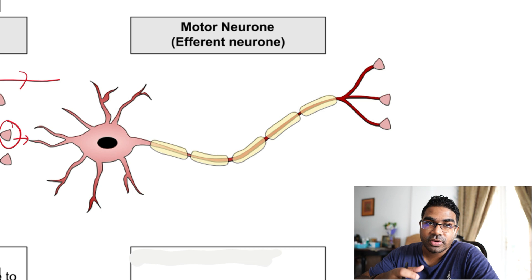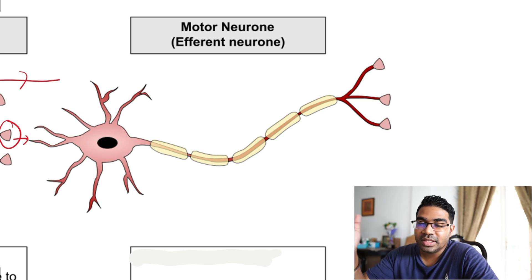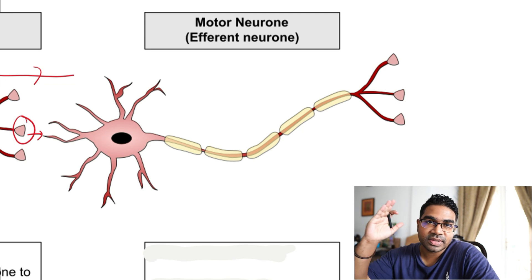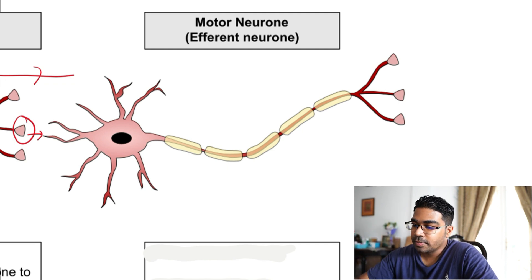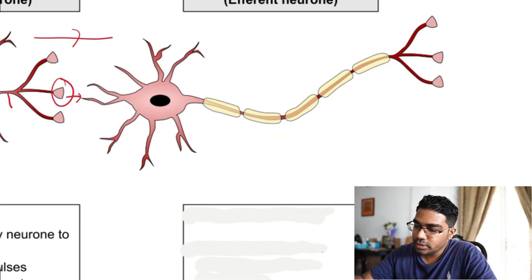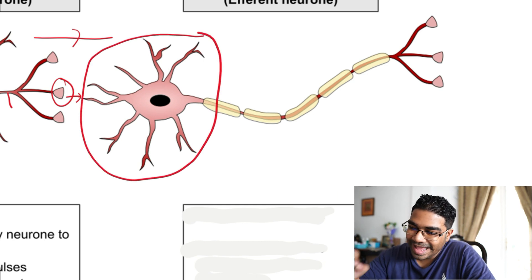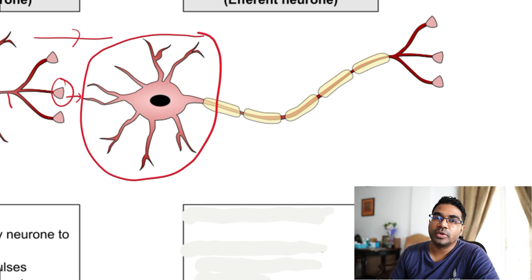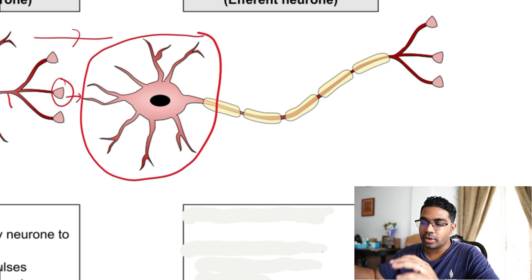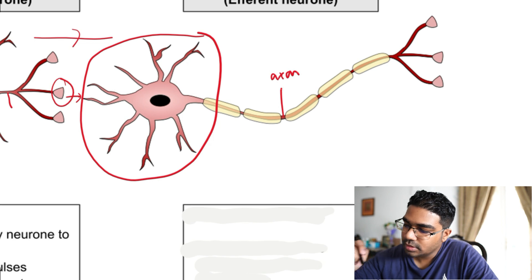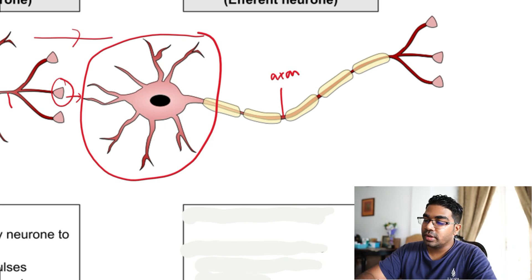The sensory neuron was the afferent neuron; now we have the efferent neuron — the motor neuron. This is actually the typical type of neuron studied earlier. Structurally, the cell body lies at one end of the motor neuron, and there is a very long axon compared to the sensory neuron.